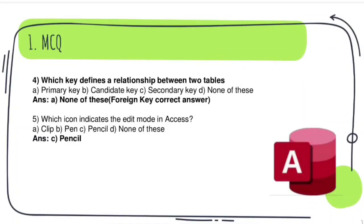Which key defines the relationship between two tables? In the second table, the relationship can be established or defined. The correct answer is the Foreign Key.